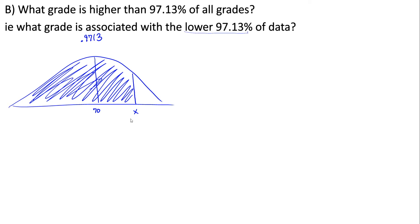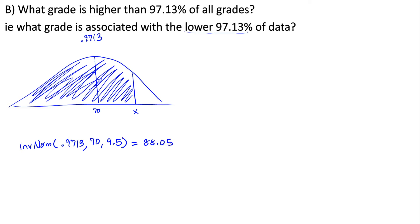To find this using the calculator, it's straightforward with inverse normal since we already have the area to the left: 0.9713. Mean = 70, standard deviation = 9.5. We end up getting 88.05.